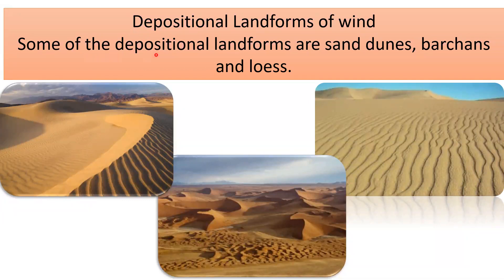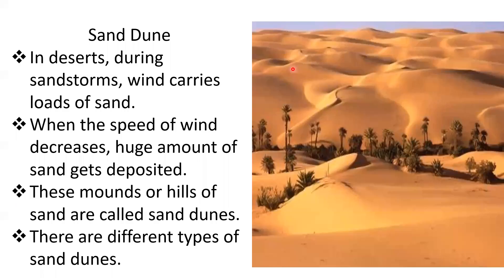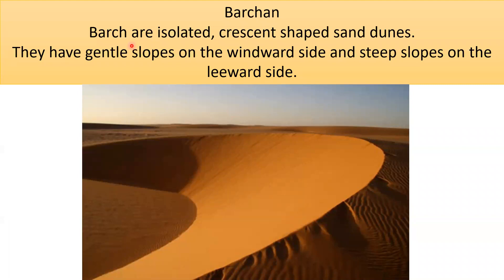Depositional landforms of wind include sand dunes, barchans and loess. Sand dunes: in deserts during sandstorms, wind carries loads of sand. When the speed of the wind decreases, a huge amount of sand gets deposited. The sand particles carried by wind are deposited in a particular place, forming mounds or hills of sand called sand dunes. Barchans are isolated, crescent-shaped sand dunes. They have gentle slopes on the windward side and steep slopes on the leeward side.